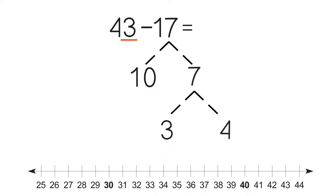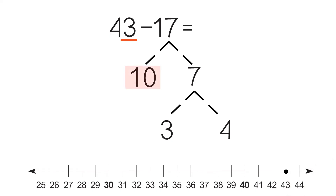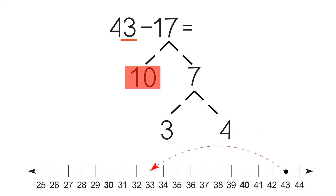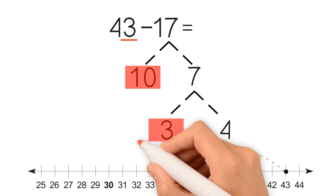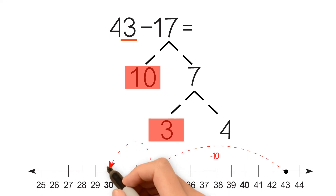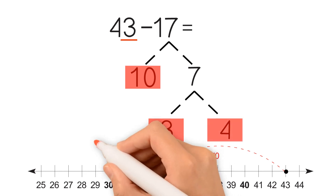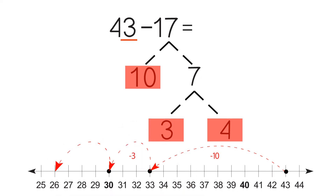Then we take the number line. We label 43 and we subtract our first number, which is 10. 43 minus 10 is equal to 33. Then we take our second number, which is 3. 33 minus 3 equals 30. To finish the problem, we subtract our last number, 4, from 30. 30 minus 4 equals 26. Our answer is 26. 43 minus 17 equals 26.